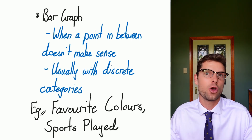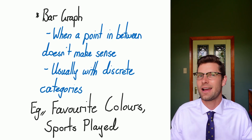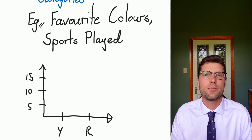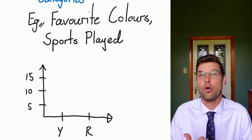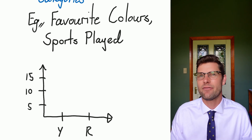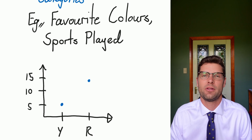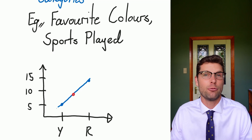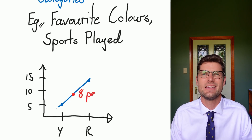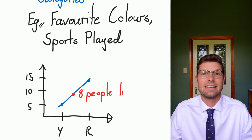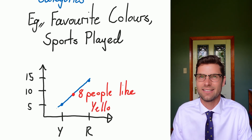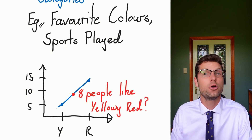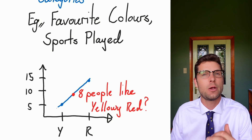Examples of this are anything that is categorical — favorite sports, favorite colors, artists, whatever. So I'm going to do a really quick graph. Let's say I interviewed people about their favorite color: yellow or red. I had five people that liked yellow and 12 people liked red. If I wanted to use a line graph, I'd be saying that picking a point in between would make sense — but I'm sure eight people don't love 'yellowy-red' as their favorite color. That's not what the question was asking. So a line graph is not appropriate because these are discrete; the middle doesn't count. A bar graph would be way more appropriate.